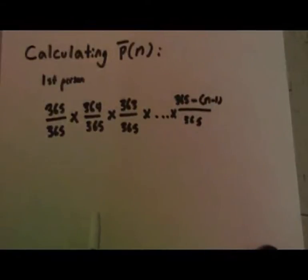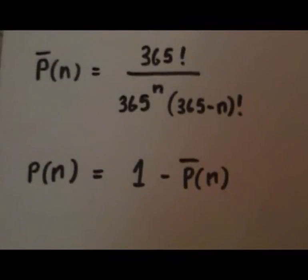Now, this entire product can be expressed as 365 factorial over 365 to the nth power times 365 minus n factorial. The probability of a birthday match is just 1 minus the complementary probability.